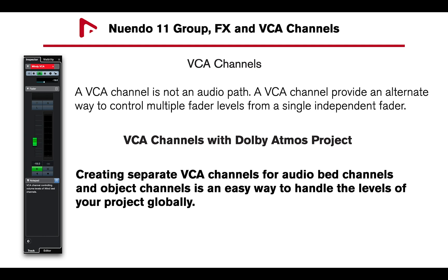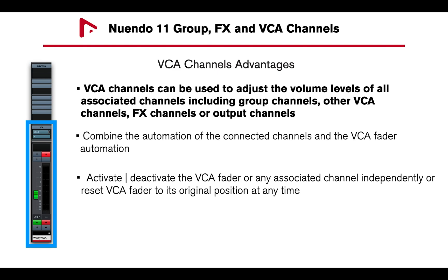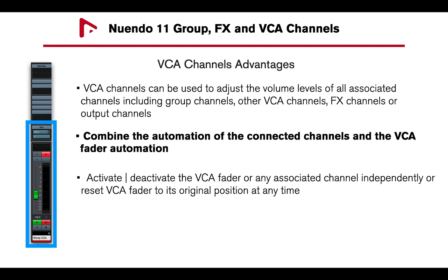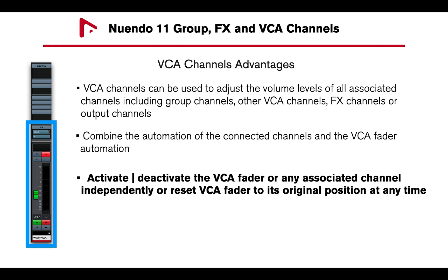In the context of a Dolby Atmos project, creating separate VCA channels for audio bed channels and object channels is an easy way to handle the levels of your project globally. VCA channels can be used to adjust the volume levels for all associated channels, including group channels, other VCA channels, effect channels, or output channels. You can combine the automation of connected channels and the VCA fader automation, activate or deactivate the VCA fader or any associated channel independently, or reset the VCA fader to its original position at any time.